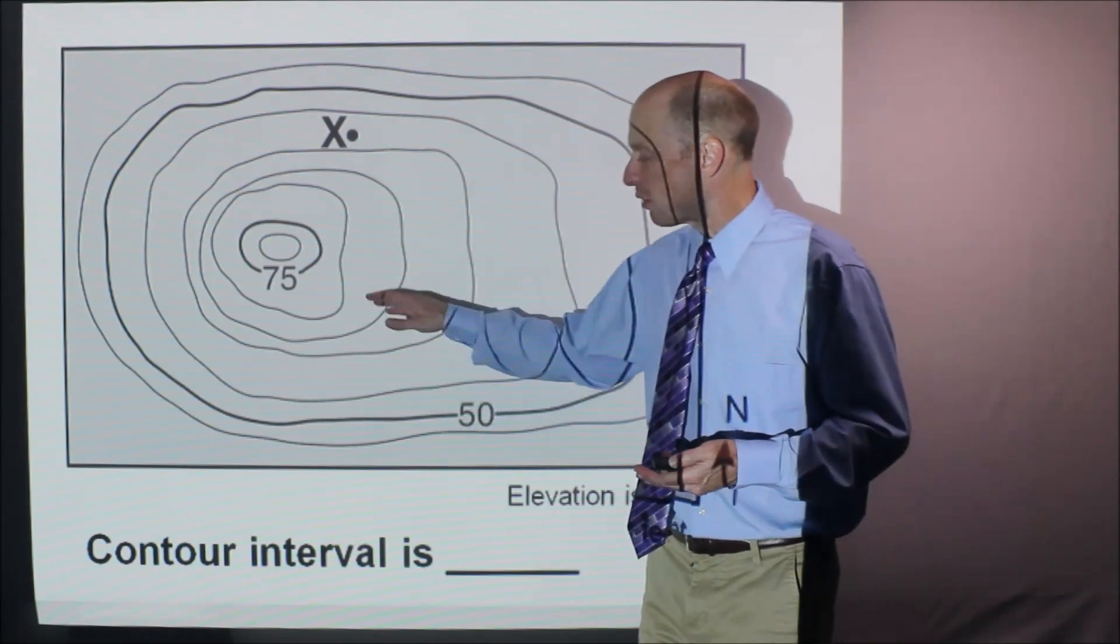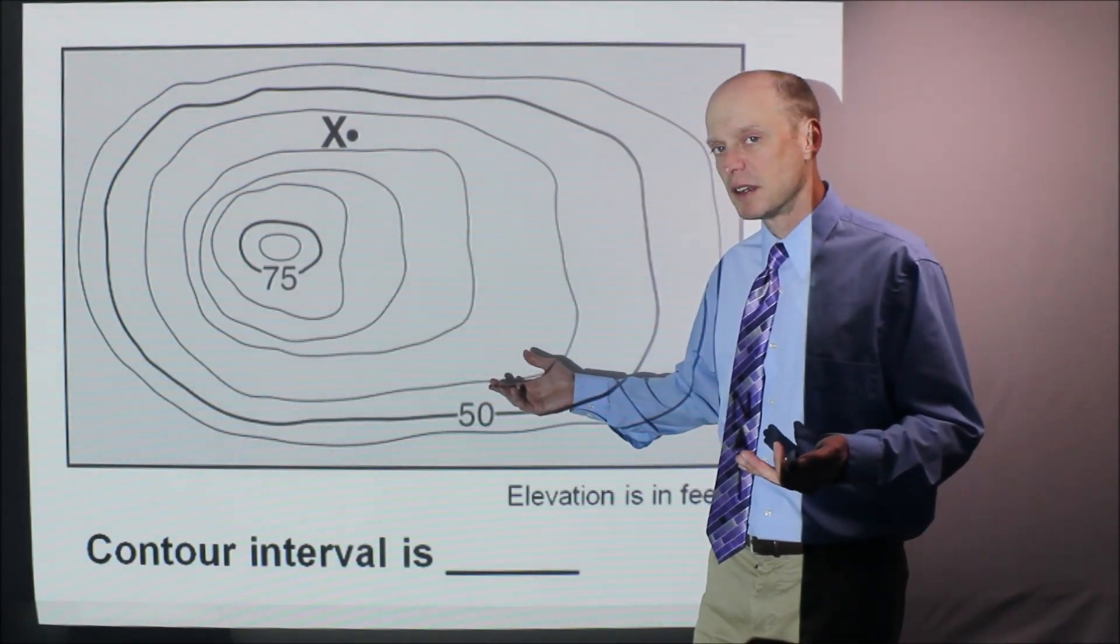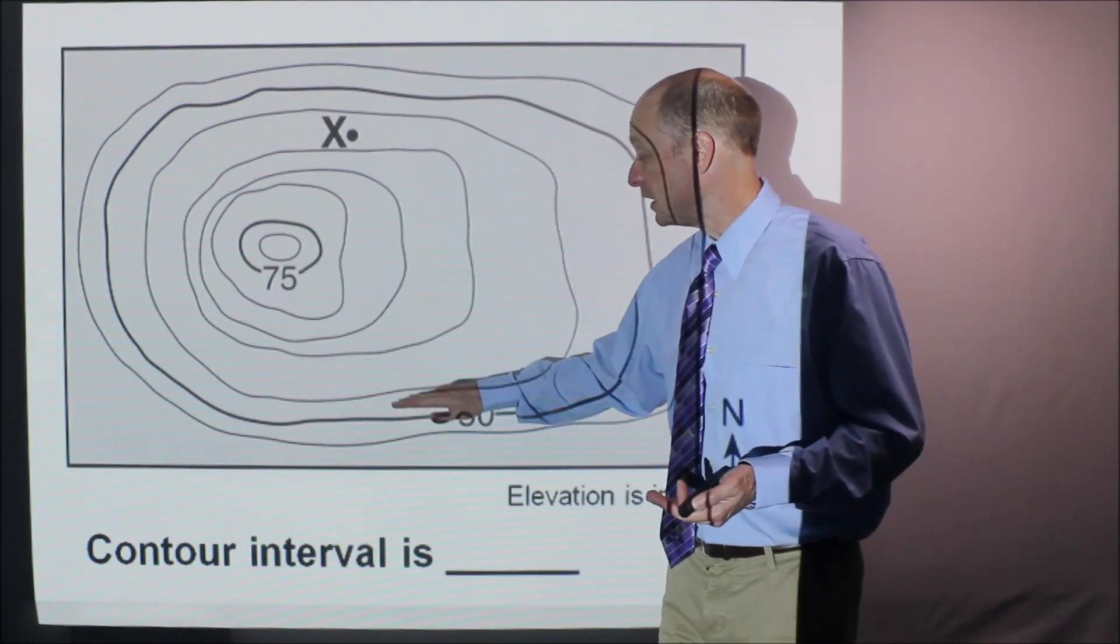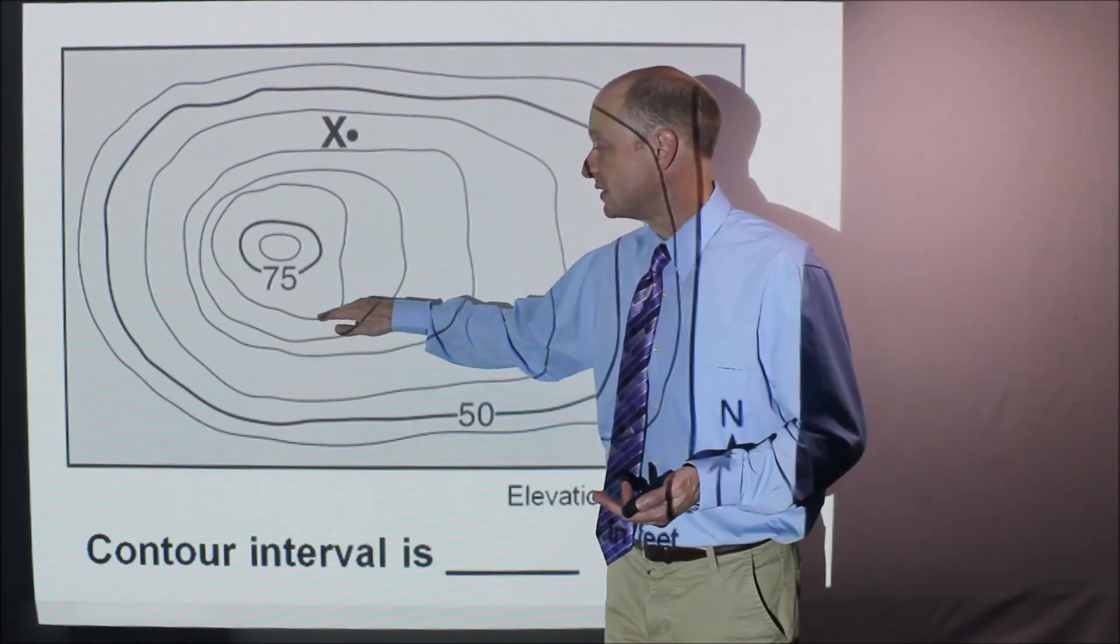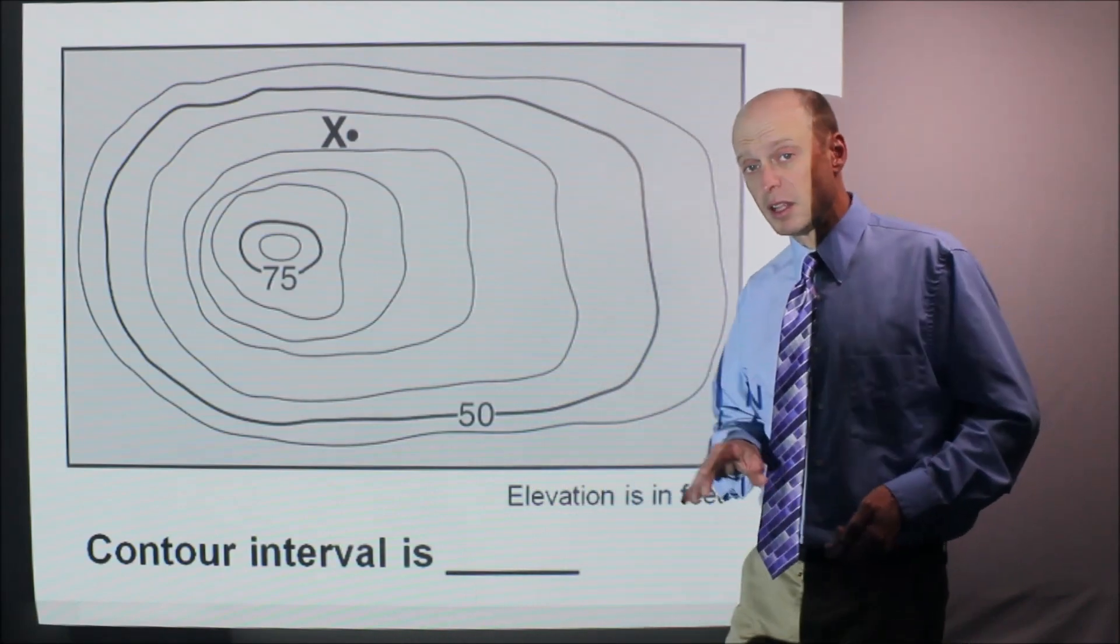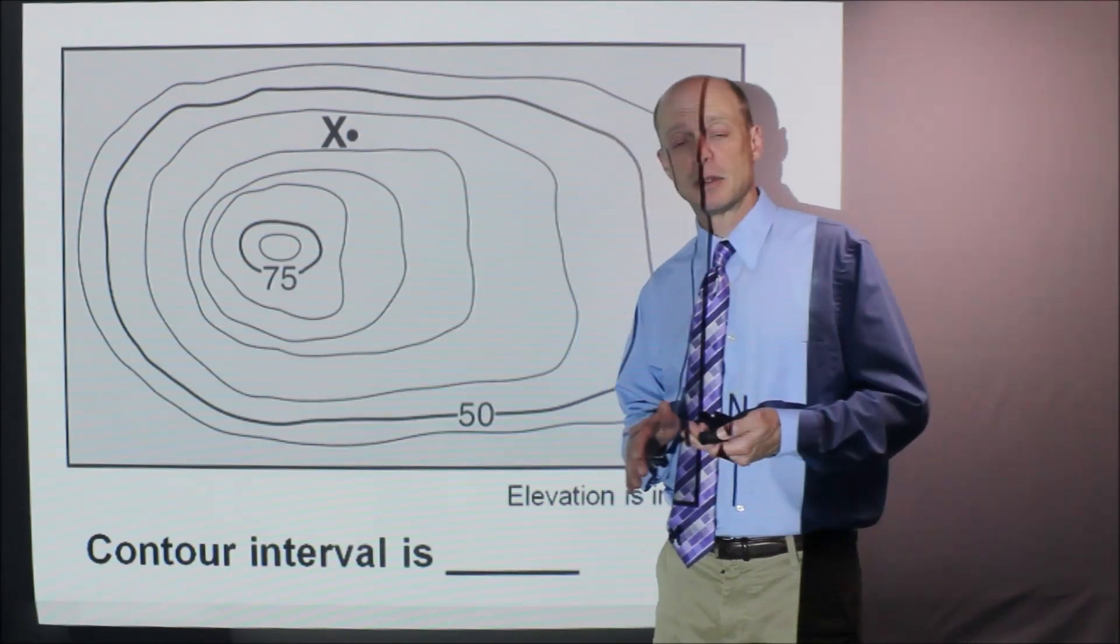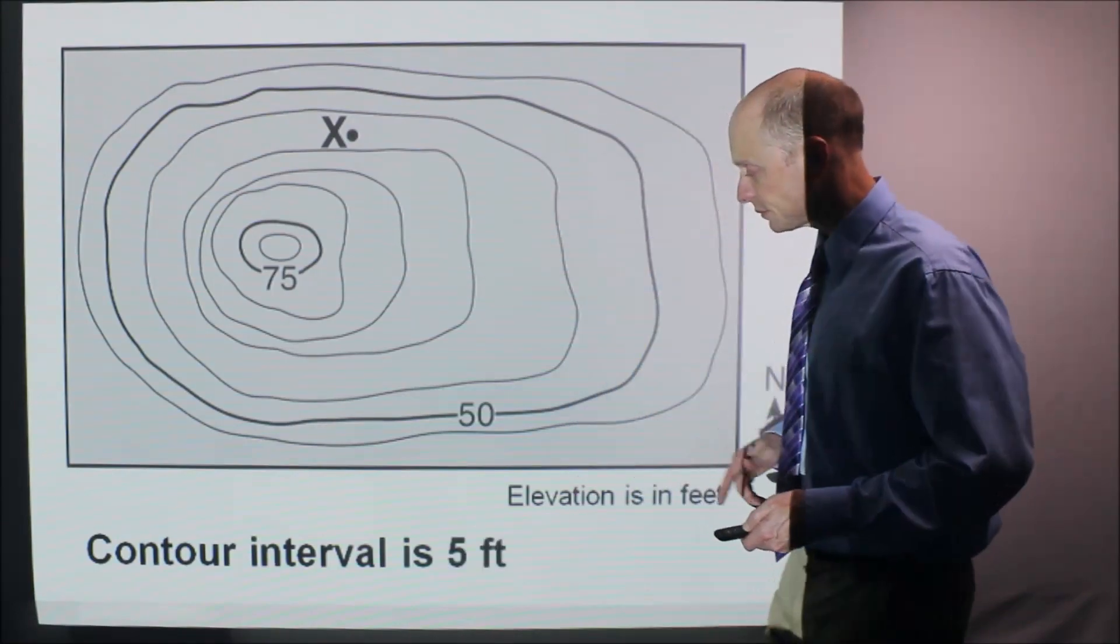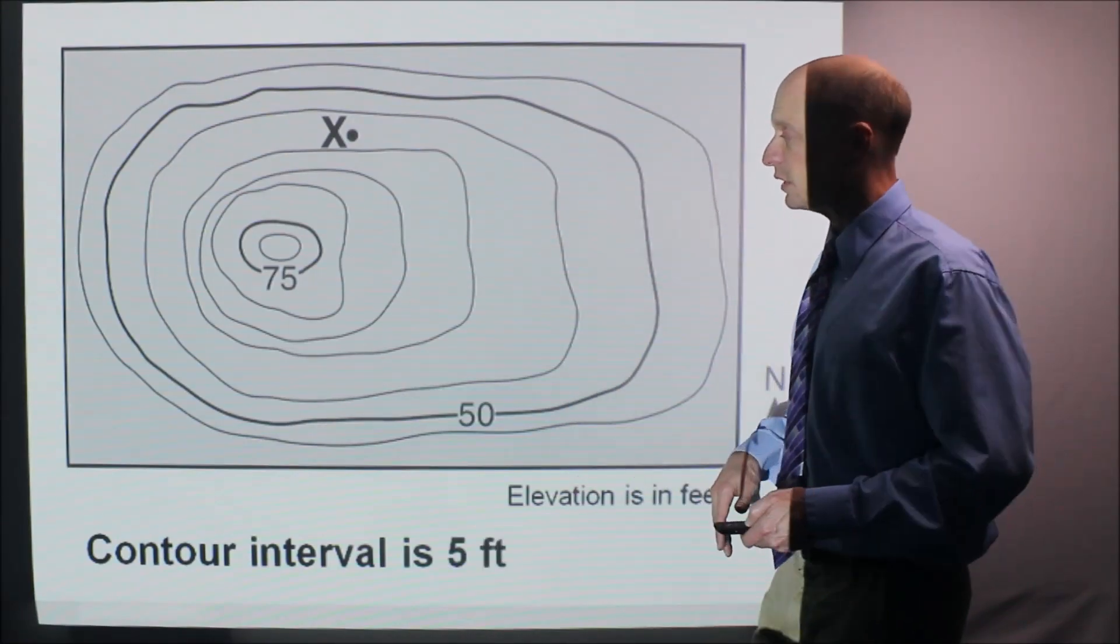So in this case, I tried a bunch of different options here and determined that it's 5 because it goes 50, 55, 60, 65, 70, 75. And it is in feet. It tells you it's in feet. Be careful because some of these maps that we show you are in meters and the distance is in kilometers. So be careful. Here the contour interval is 5 feet.